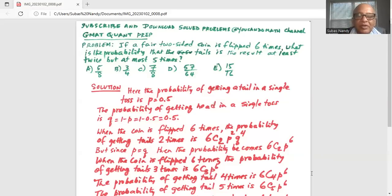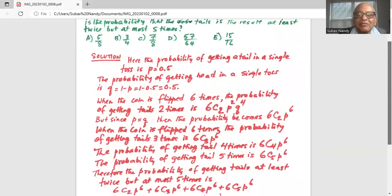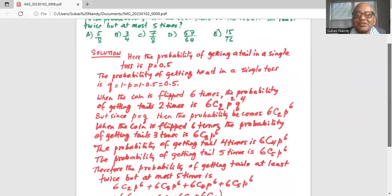When the coin is flipped six times, the probability of getting exactly three tails is 6C3, also P to the power of six. And when you flip the coin six times, the probability of getting exactly four tails is 6C4, P to the power of six.